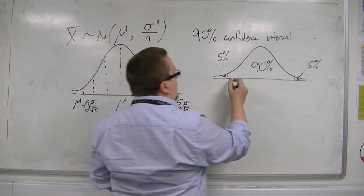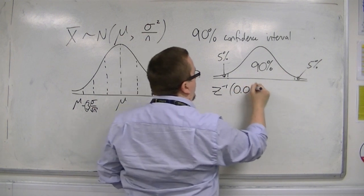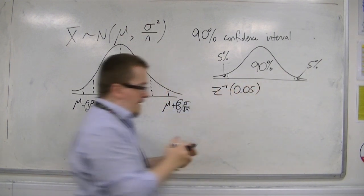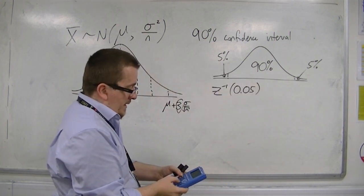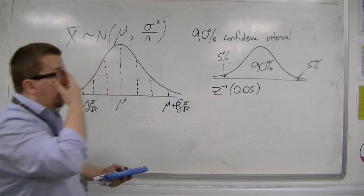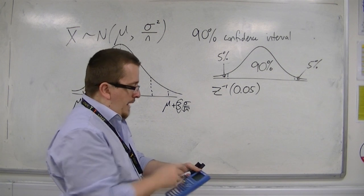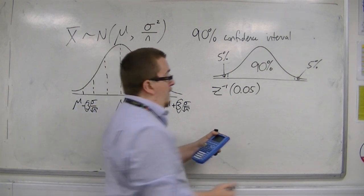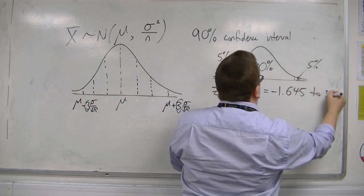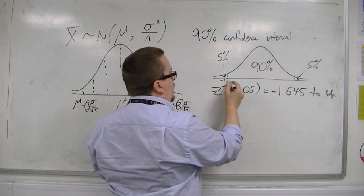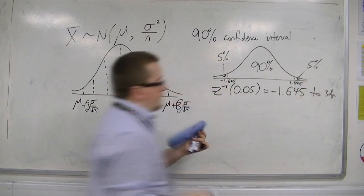So, in order to work out what the Z value is, we would have to use the inverse norm of 0.05. That would give me that value there. If I do that quickly on the blue calculator, you can also do this through the tables at the back of the formula booklet. So, inverse norm of 0.05, and you get minus 1.645. So, minus 1.645 to three decimal places. So this is minus 1.645, and that is plus 1.645.